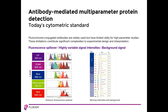The use of fluorescence is still considered a cytometric standard. Fluorochrome conjugated antibodies are widely used, but they have limited utility for high-parameter studies. There is often signal overlap and other challenges, including highly variable staining intensities, background signal, and autofluorescence. These create limitations that impart significant complexities to experimental design and interpretation. Because of this, traditional fluorescence is currently limited in terms of routine use to around 18 to 20 parameters at a maximum.